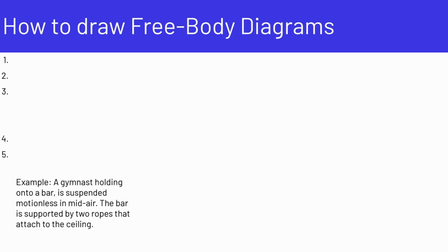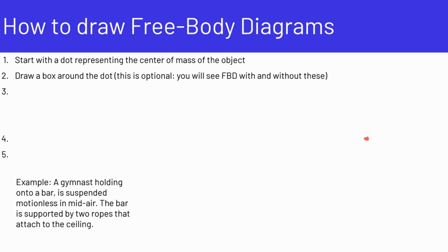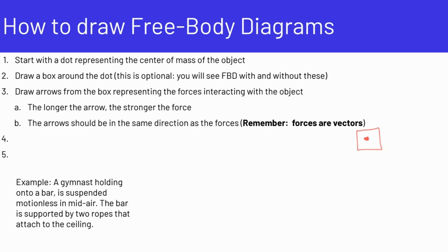Now we're going to go through the process of drawing a free body diagram. Step one is to draw a dot representing the center of mass of the object. Step two is to draw a box around the dot — this is optional; you'll sometimes see free body diagrams with and without the box. Step three is to draw arrows from the box representing the forces interacting with the object.